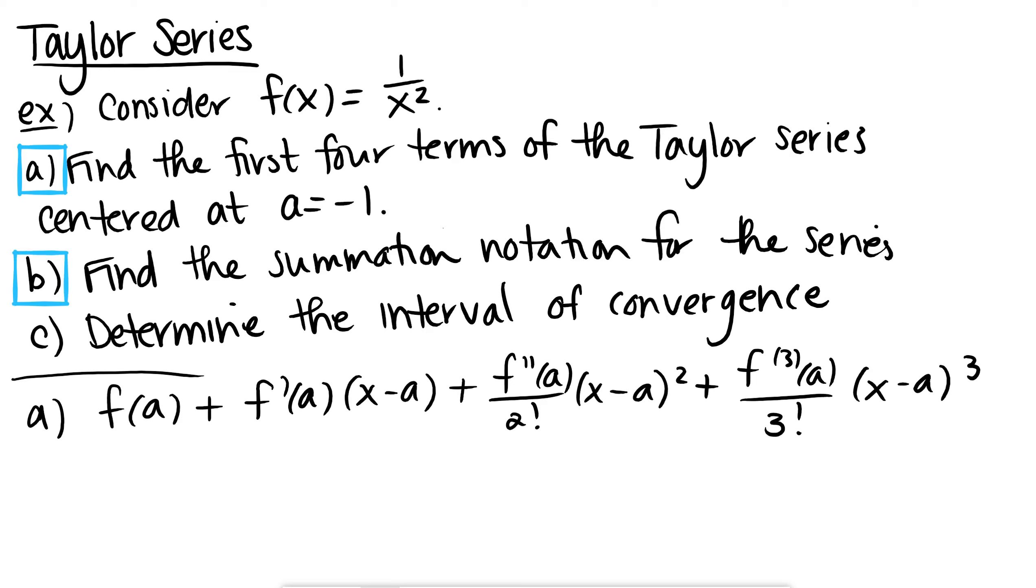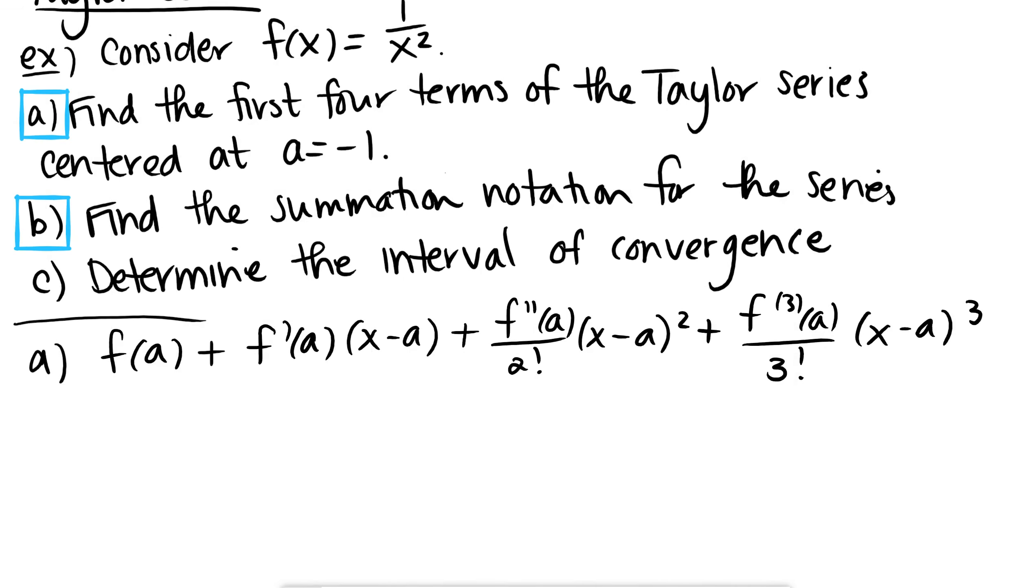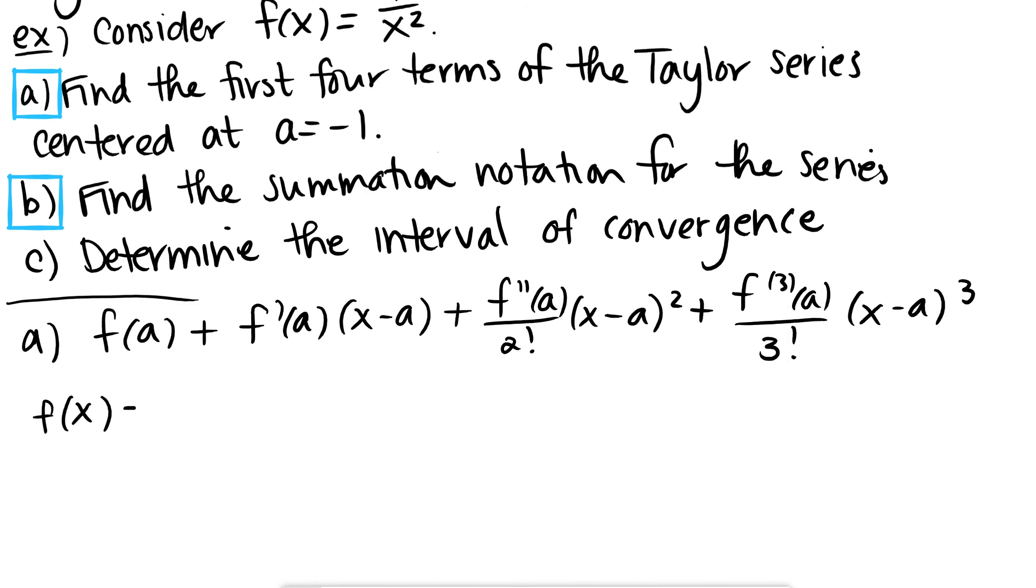And of course, if it's a series, it just goes on forever. So as we look ahead here, I want to find those first four terms, but then I also want to find summation notation for it. So I want to see if I can kind of notice a pattern as I'm writing out these terms. So what I know I need, I have, I know what f of x is. f of x is x to the negative 2. I know I'm going to take the derivative, so I'm going to rewrite it like that. And I need some derivatives. So f prime of x is negative 2x to the negative 3.